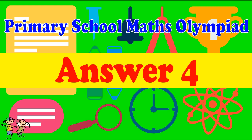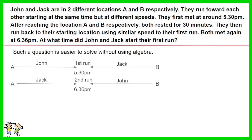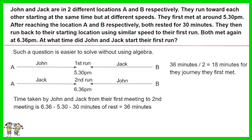Answer for question 4. Such a question is easier to solve without using algebra. The time taken by John and Jack from their first meeting to second meeting is 6:36 p.m. minus 5:30 p.m. minus 30 minutes of rest, which equals 36 minutes. 36 minutes divided by 2 equals 18 minutes for the journey to their first meeting. Thus both started at 5:30 p.m. minus 18 minutes, which is 5:12 p.m.